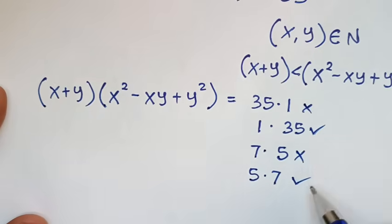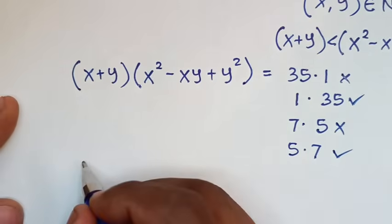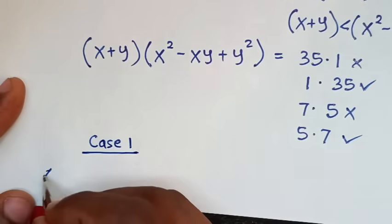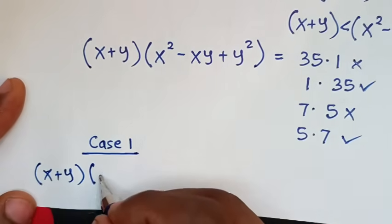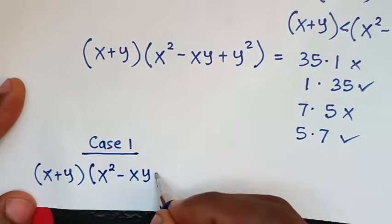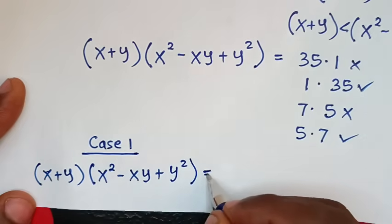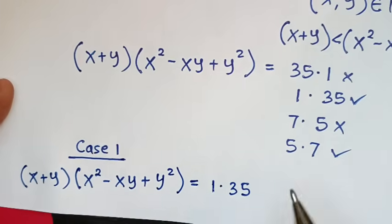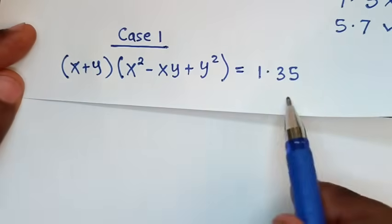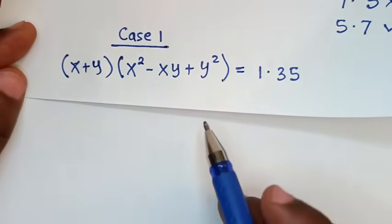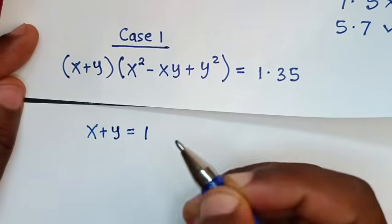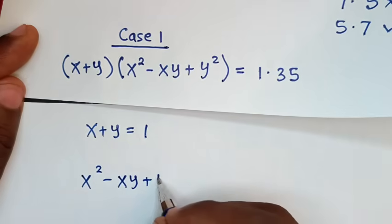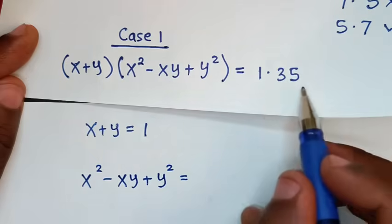So we have two cases. Case 1: x plus y times x squared minus xy plus y squared is equal to 1 times 35. So x plus y is equal to 1, and x squared minus xy plus y squared is equal to 35.